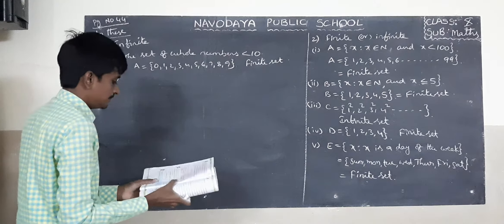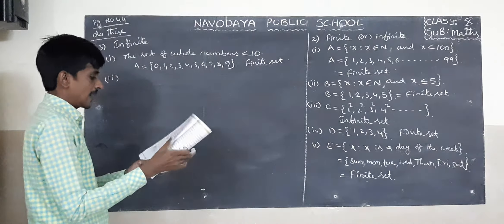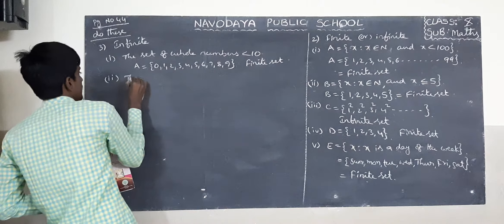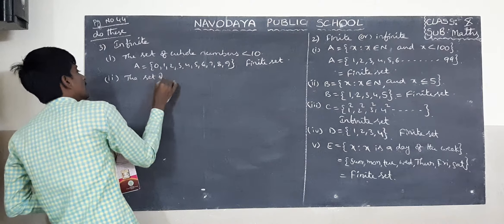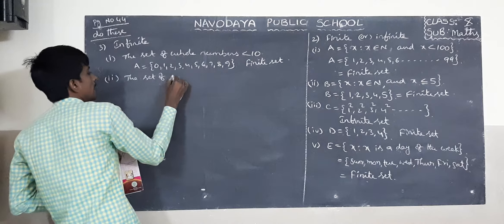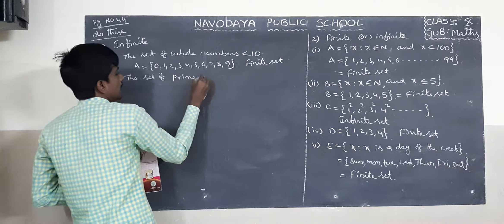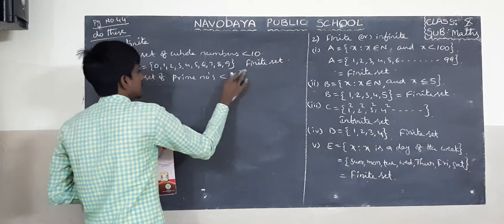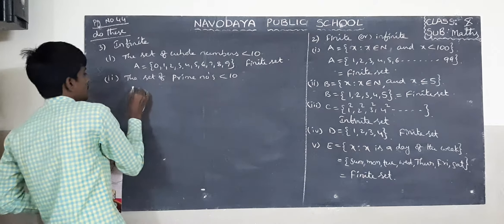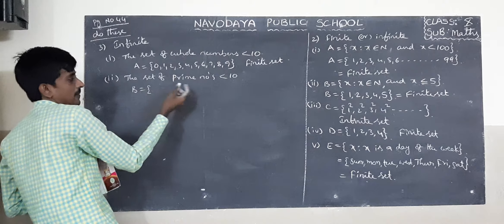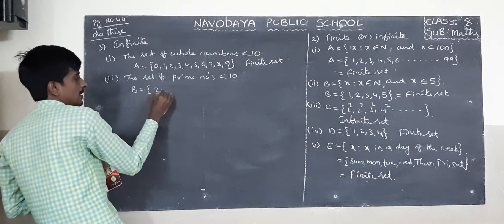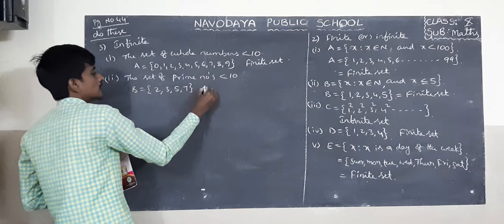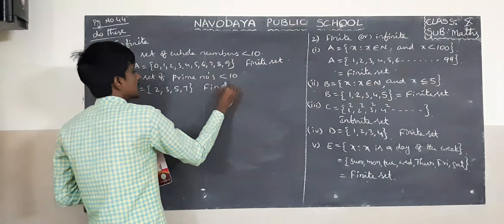Second one: the set of prime numbers less than 10. What are the prime numbers less than 10? 2, 3, 5, 7 only. So it is also a finite set.